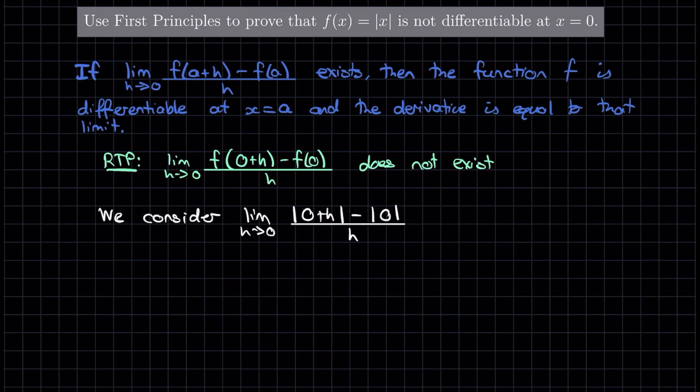Now what I want to do, as I said, is show that this limit does not exist. But what does it mean for a limit to exist? Well, a limit exists if the left hand and the right hand limits exist and are equal to each other.